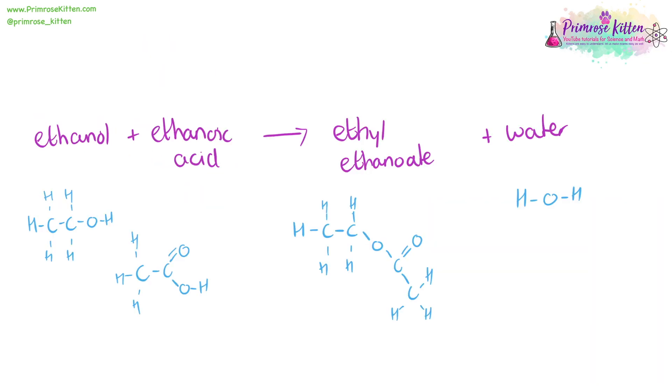And if you react a carboxylic acid with alcohol, you're going to make an ester. For example, if you react ethanol with ethanoic acid, you're going to get ethyl ethanoate and water.